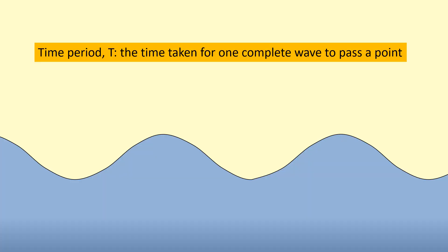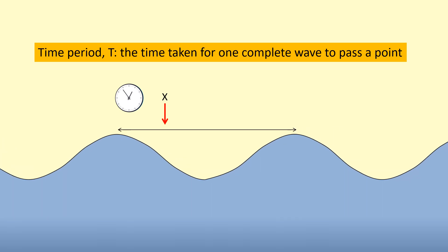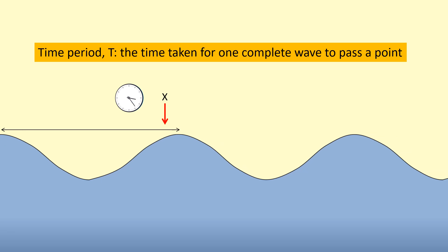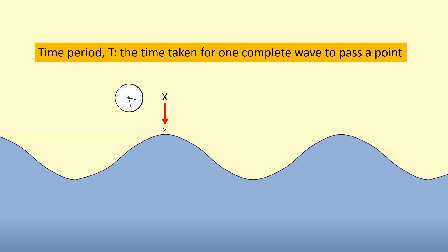In the context of waves, the time period is the time it takes for one complete wave to pass a point. Let's say we're standing at point X with a stopwatch, timing how long it takes for one whole wave to pass. For example, if it took 3.5 seconds, that's the time period. Normally you don't just measure one wave — you measure multiple and divide by the number of waves to get a better result.